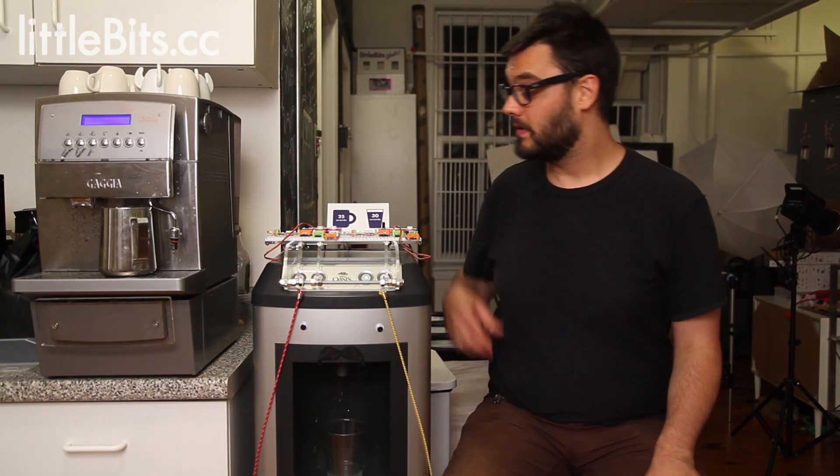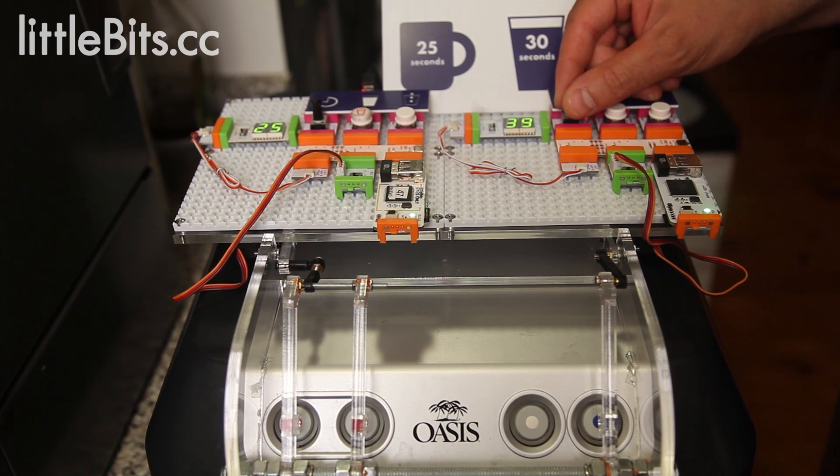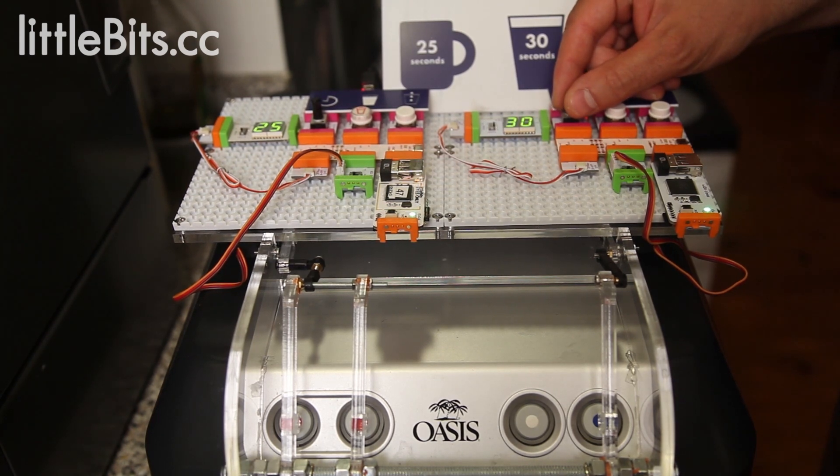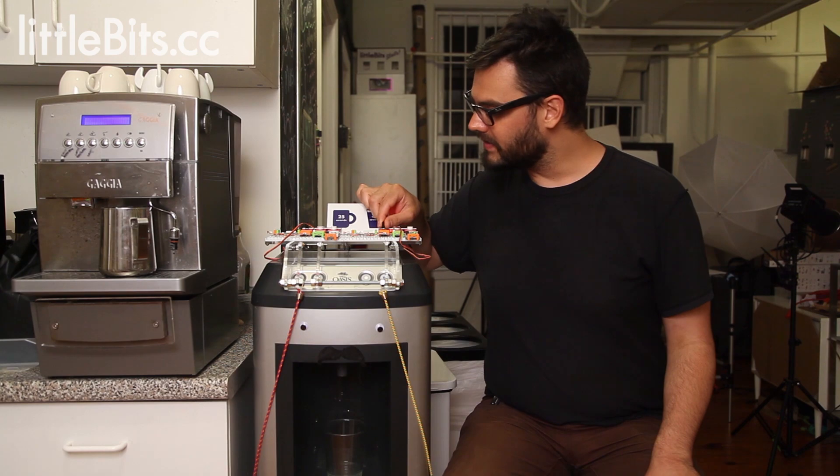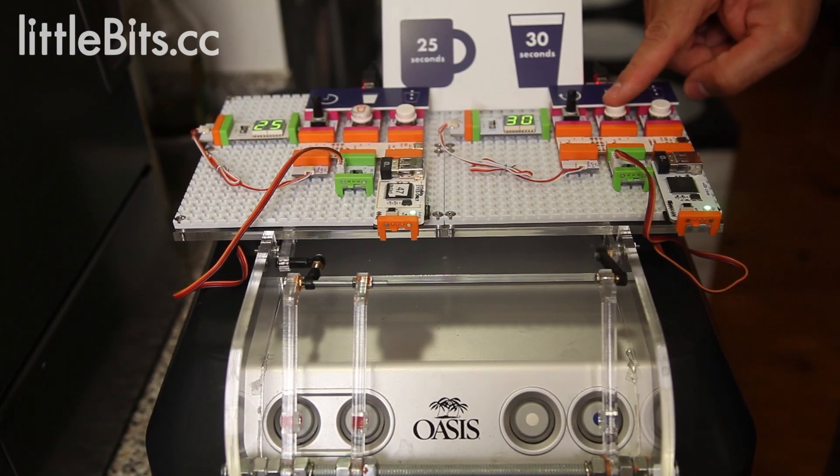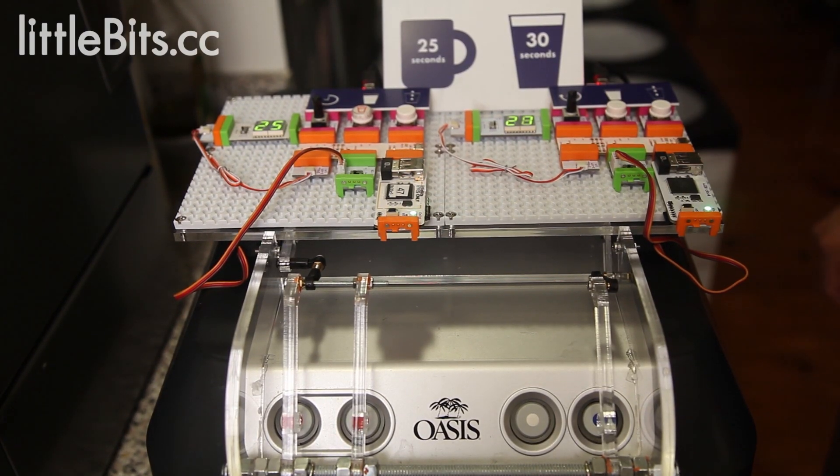Here's how Mr. Thirsty works. You set how long you'd like to fill your glass with the dimmer switch. We found that 30 seconds works pretty well for our office glasses, and then you press the button right here to start filling.